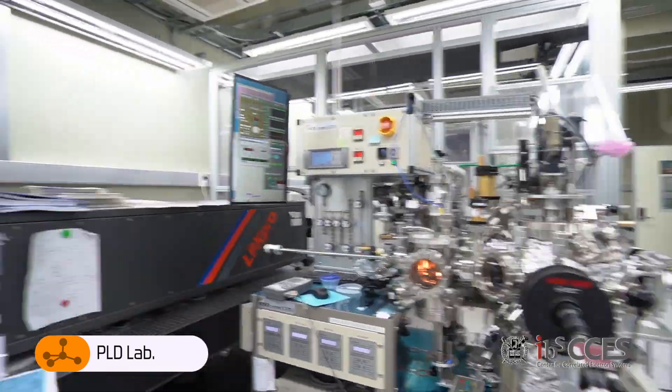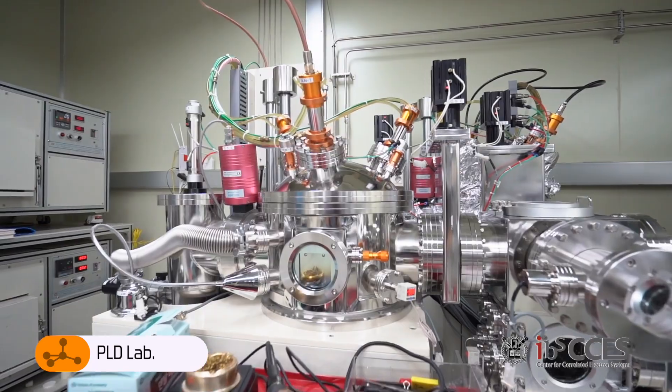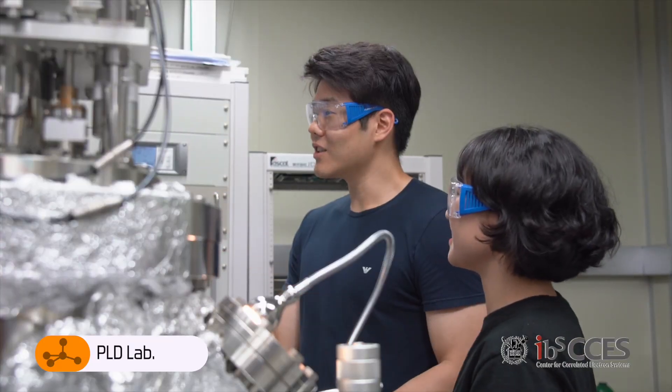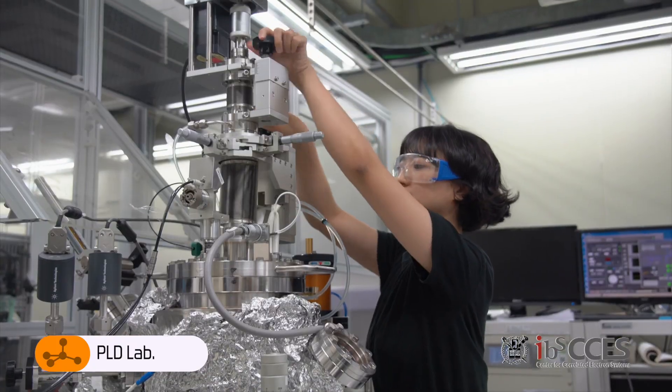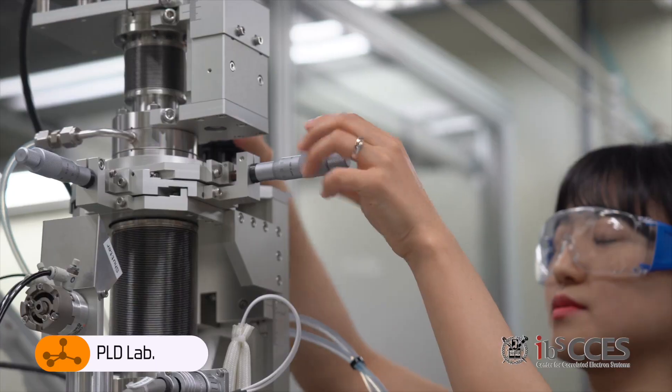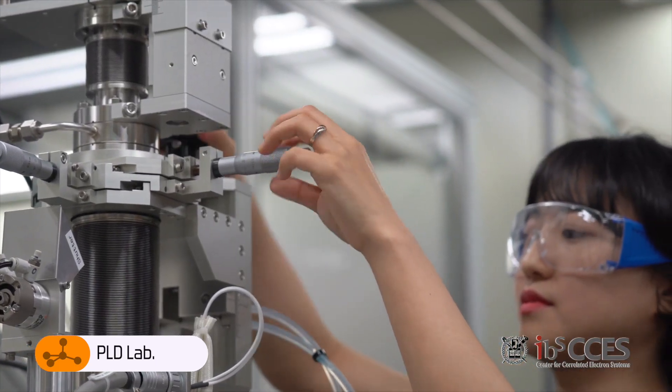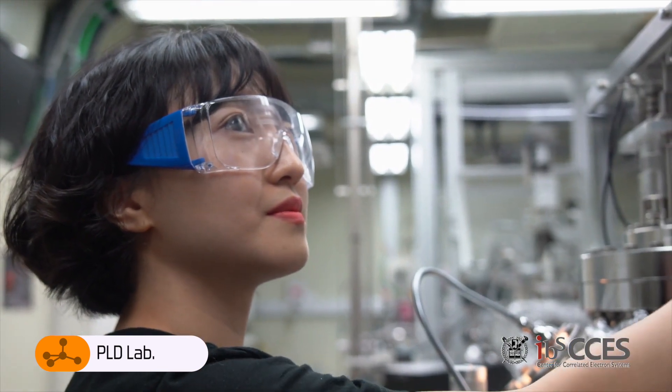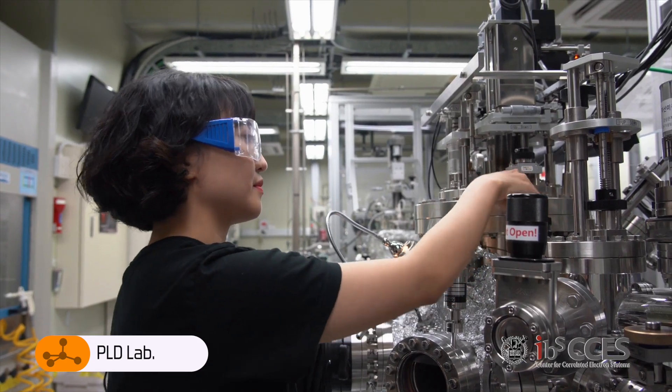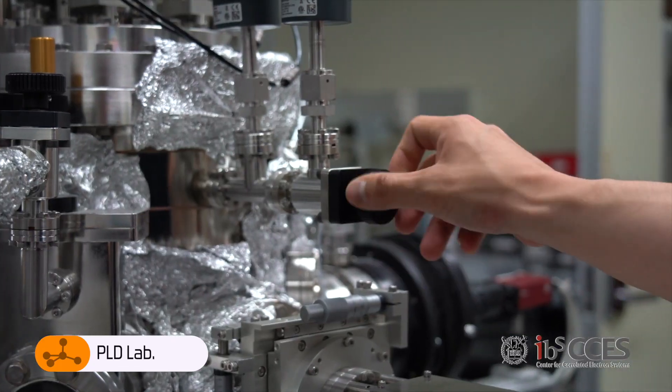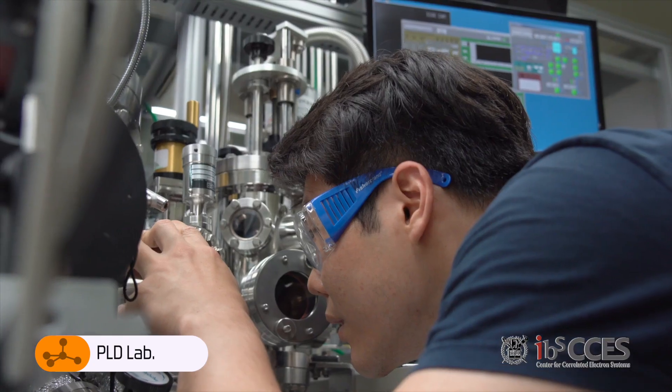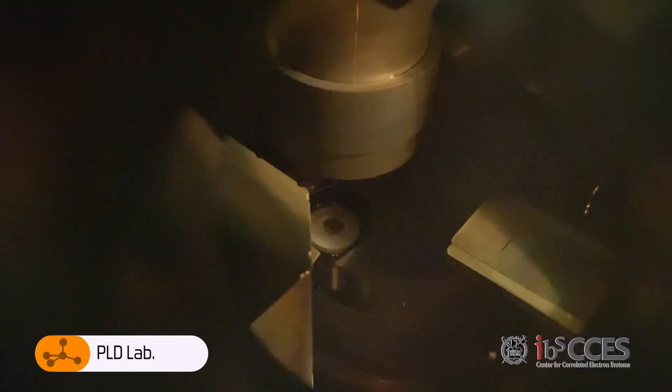For efficiency, two PLD machines are sharing one excimer laser. Moreover, all chambers have high-pressure RHEED to monitor and control the growth. Some chambers have IR laser heater, which can reach high temperatures rapidly. We also have in-situ ellipsometer to characterize the film during the growth. With this cutting-edge facility, we have the capability to grow challenging oxide thin films, like pyrochlore iridates, superconducting ruthenates, and complex oxide heterostructures.